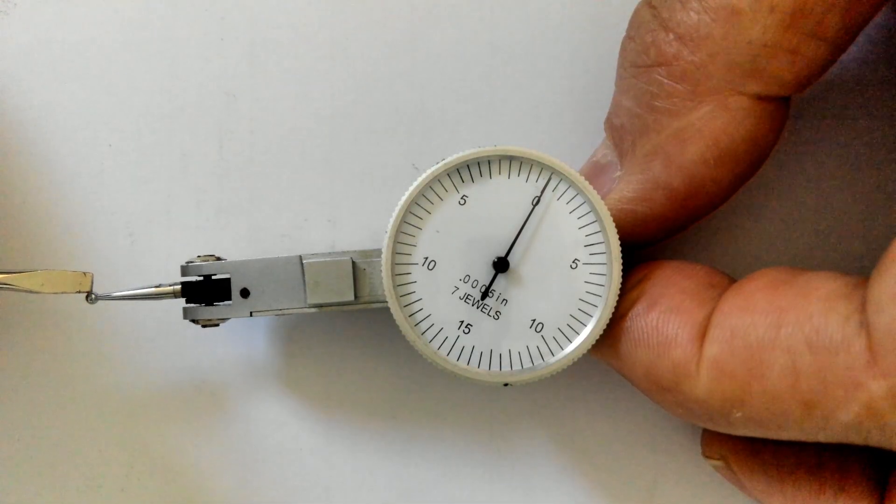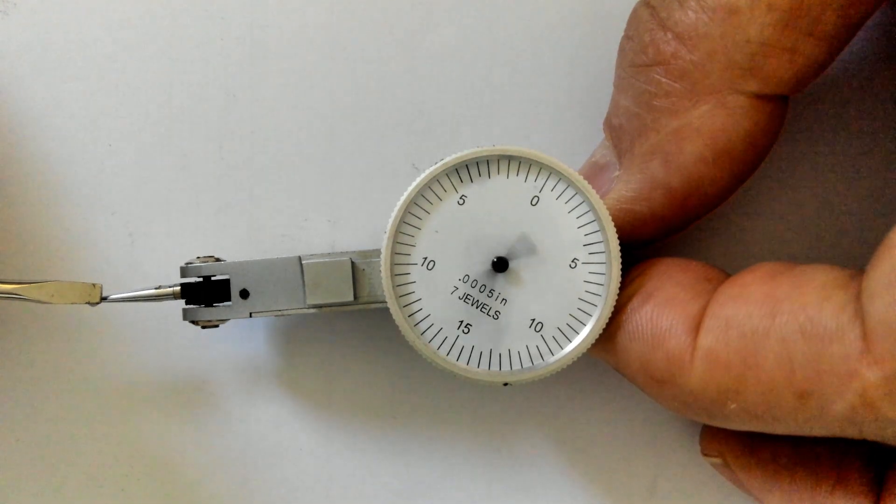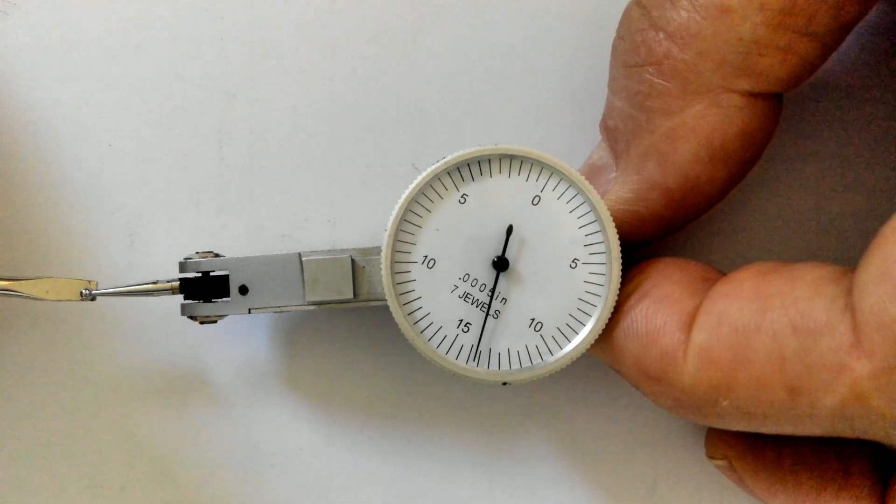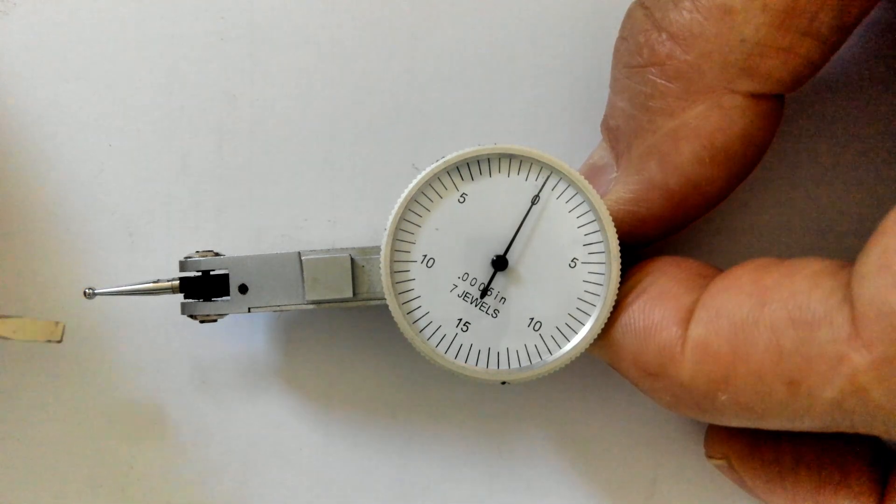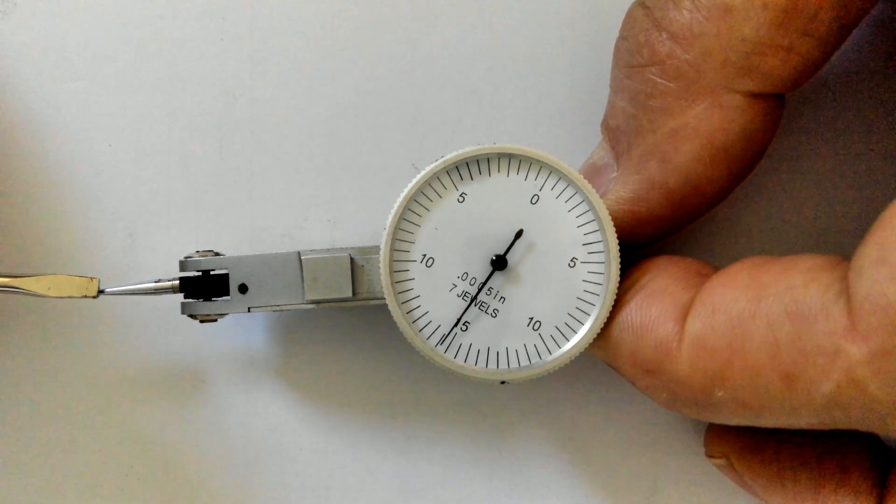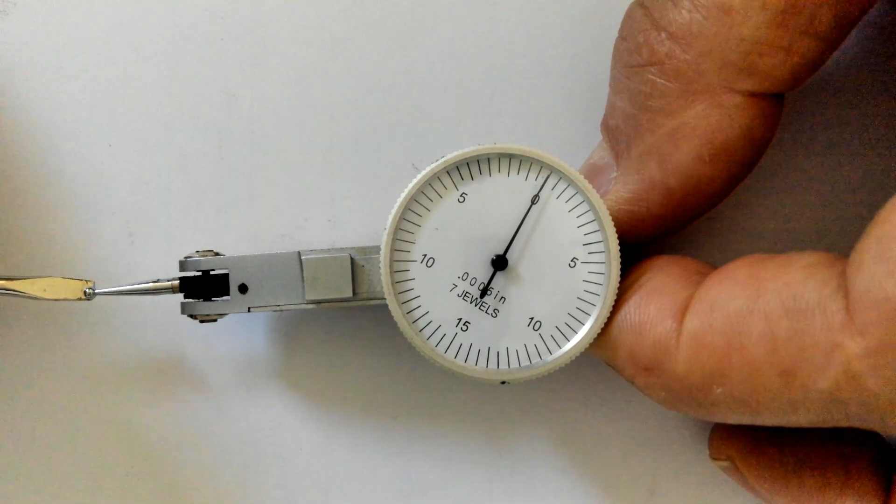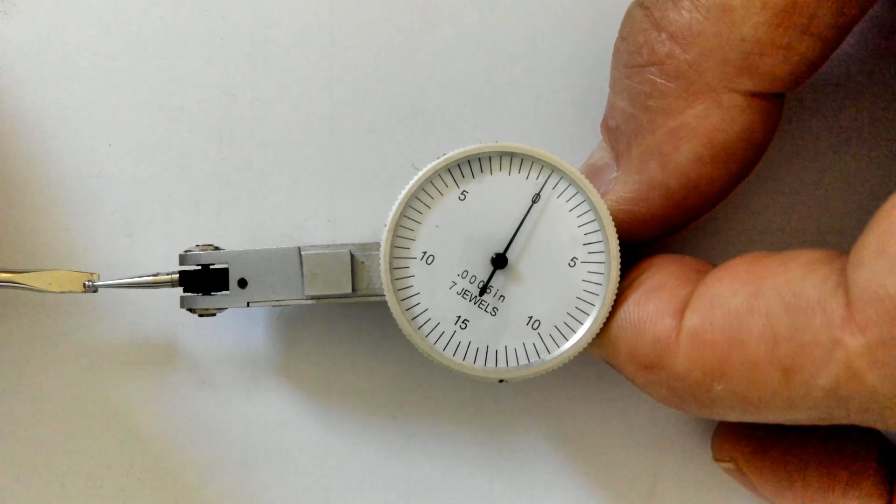Facing forward we can see the dial movement. Notice the dial moves from a center position. Moving the plunger from center backwards rotates the dial clockwise. Moving the plunger from center forward also rotates the dial clockwise.